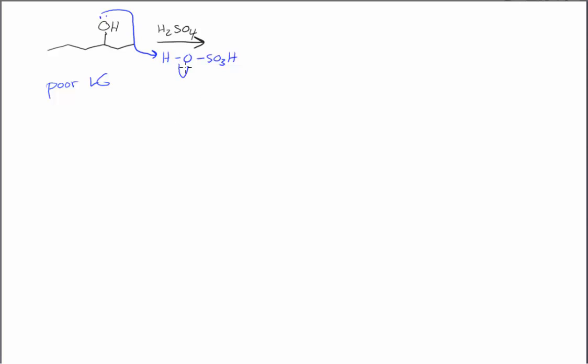So we start off with a proton transfer in this case. And that's one of the optional steps. We say it's optional, but it basically means we use it occasionally, but don't always use it. It's not that you have the option to use it. So now we have a better leaving group here.